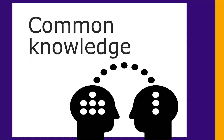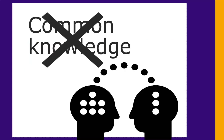So what don't you need to cite? If something is common knowledge, you don't need to cite it. Common knowledge can be a bit tricky if you're new to a subject and don't know what everyone knows. So if you aren't sure, you should cite.